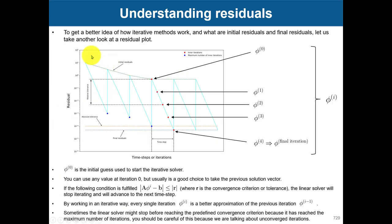Let's talk about residuals. Honestly, I don't recommend you to rely on residuals to assess your solution — the accuracy of your solution — because they can be very misleading. A clear example is the cylinder case where at one point you see the residuals go up, and many people may interpret that as divergence. It's not divergence; it's just a truly unsteady behavior.